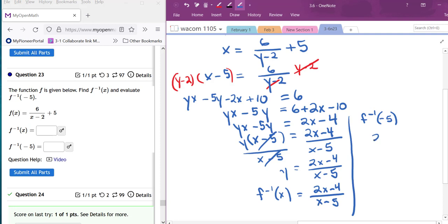So I will have 2 times negative 5 minus 4 over negative 5 minus 5. So this is negative 10 minus 4 is negative 14 over negative 10. We can clean up by factoring out a common factor of 2, which gives us 7 over 5.